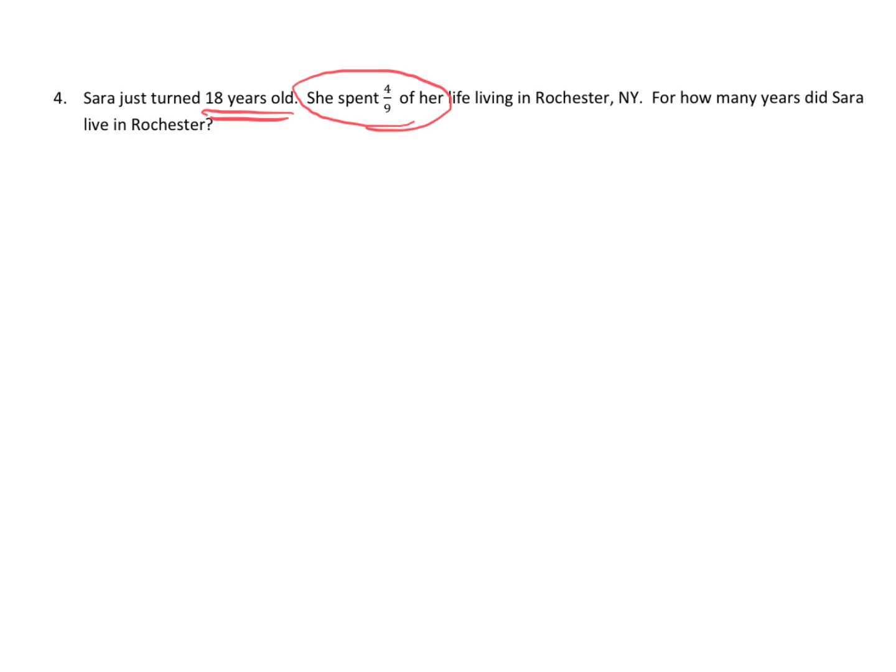That's 1, 2, 3, 4, 5, 6, 7, 8, 9, and then 10, 11, 12, 13, 14, 15, 16, 17, 18. So now we can see that each column represents a ninth, because we have 9 columns total.